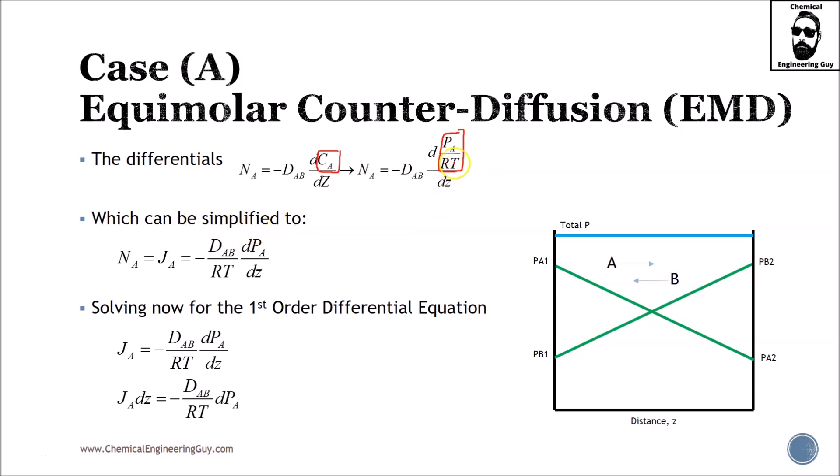So what I'm going to do is substitute in concentration of A, and we have partial pressure of A divided by RT, which can be further simplified. RT will be constant because temperature is not changing and R is by definition a constant. So just once again, in this specific case, I want to remind you that the molar flux of A equals the molar diffusion of A. Just in this case, please do not try to apply this logic to other cases. This is only for equimolar counter diffusion for a binary mixture.